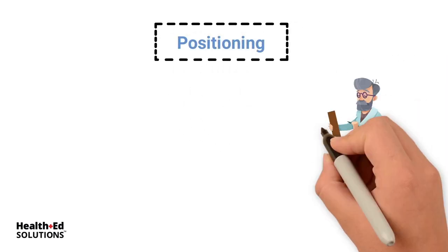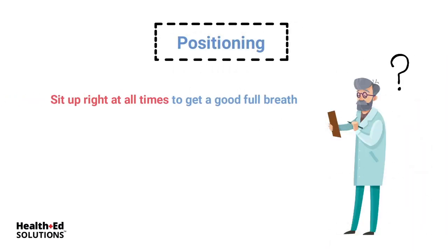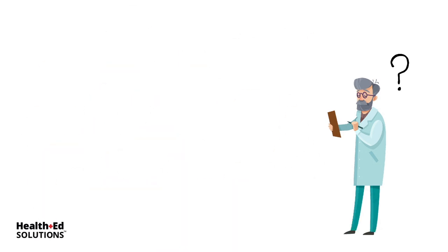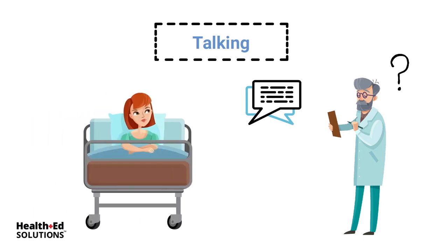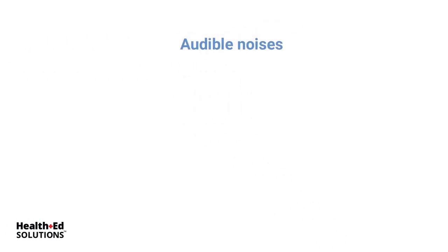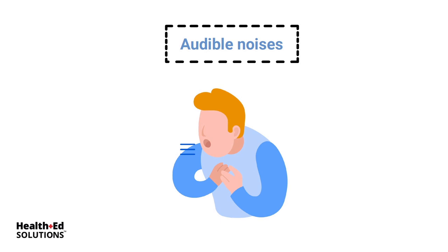Positioning — do they have to sit upright at all times to get a good full breath, or are they just laying back in the bed breathing okay? Are they in a tripod position struggling to breathe? That's a sign of a COPD exacerbation. Just talking to your patient — are they able to carry on a conversation without getting short of breath? Sometimes you may even hear audible wheezes just by walking into the room. That is a huge red flag. So that sums up inspection.